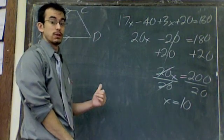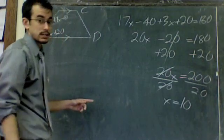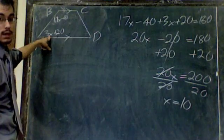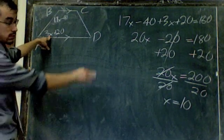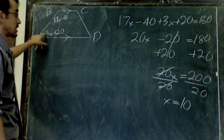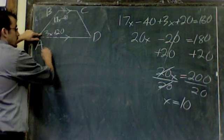As per usual, make sure to plug it back into your problem. If X is 10, and this says 3X plus 20, that's 3 times X, which is 10. 3 times 10 is 30. 30 plus 20 is 50. So the measure of angle A is 50.